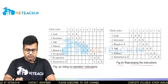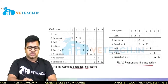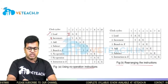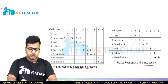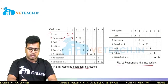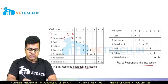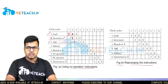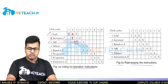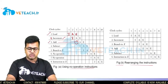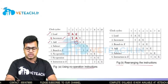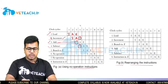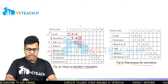In the first table, the LOAD instruction enters at clock cycle 1 (fetch phase). At clock cycle 2, INCREMENT enters the first phase while LOAD moves to the second phase. At clock cycle 3, ADD is inserted, and LOAD completes execution. By clock cycle 4, INCREMENT completes execution and ADD is at the ALU operation phase.